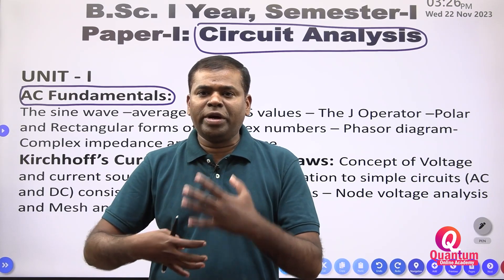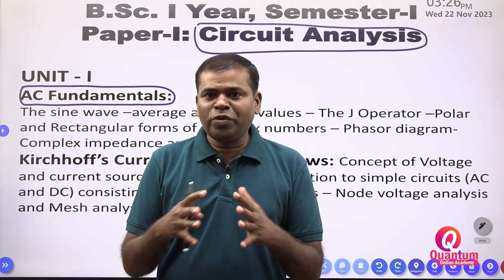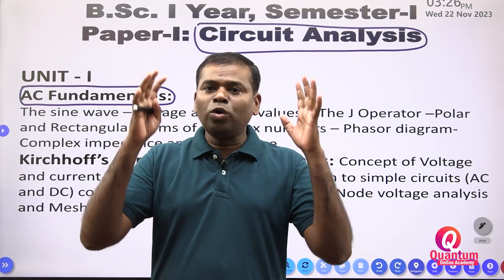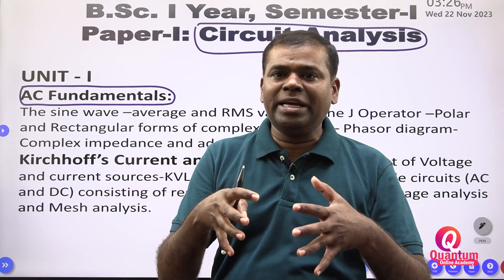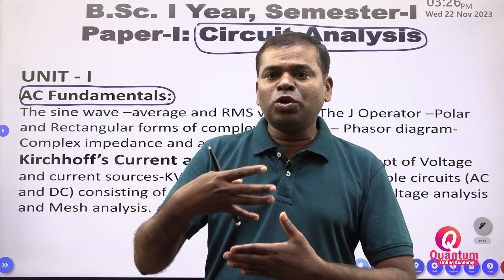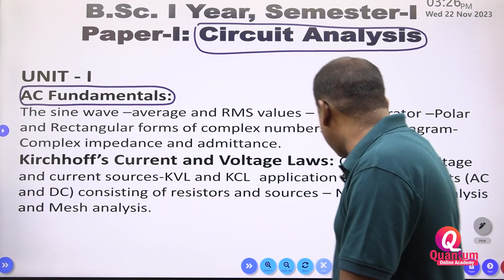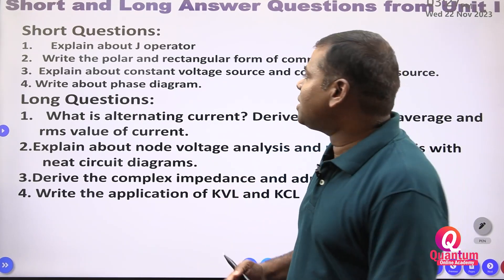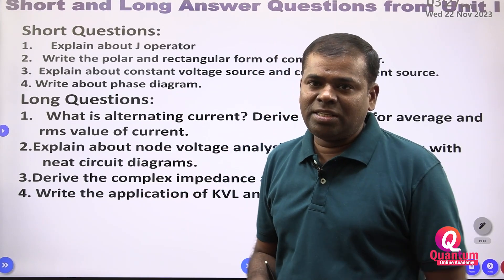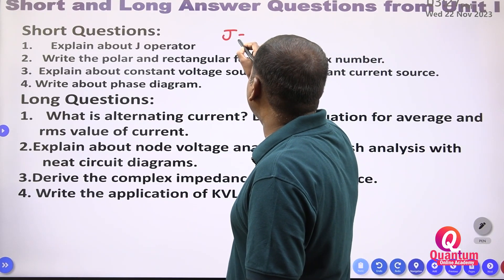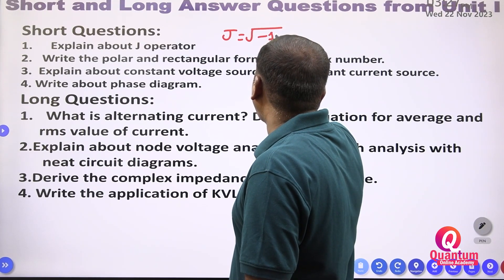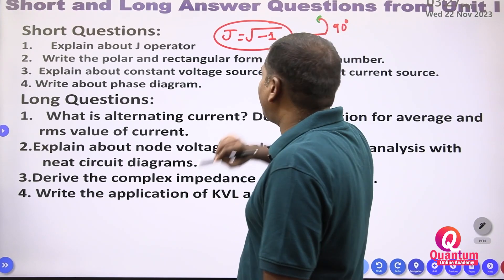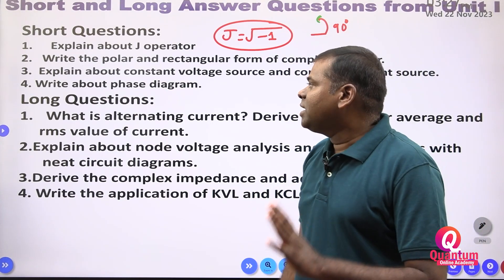You should read the entire portion from your textbook or whatever your teacher has taught. Even after reading, you may find it complicated because in intermediate you learned question-wise. So I'm giving you the expected questions. From short answer type questions: explain about the j-operator. j is equal to the square root of minus one; if you operate on any function it should be rotated anti-clockwise 90 degrees — that is the j-operator.